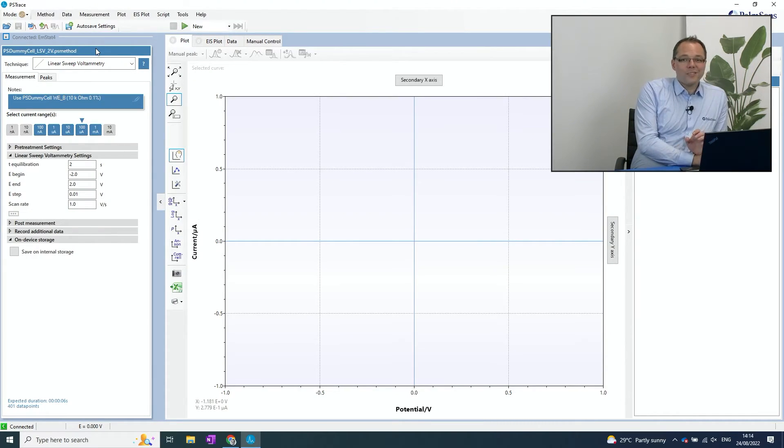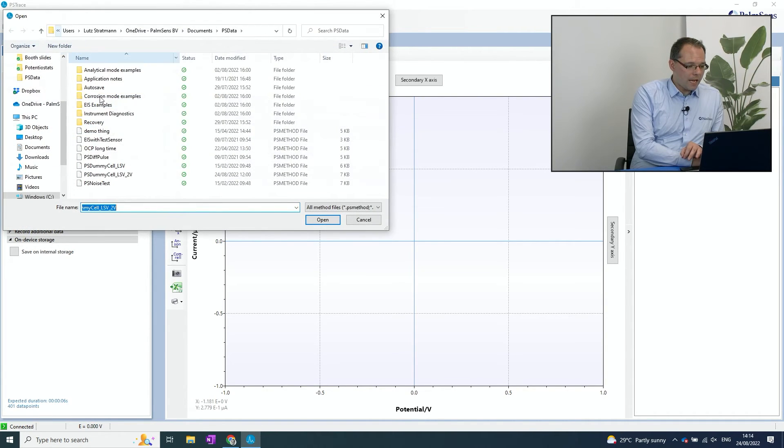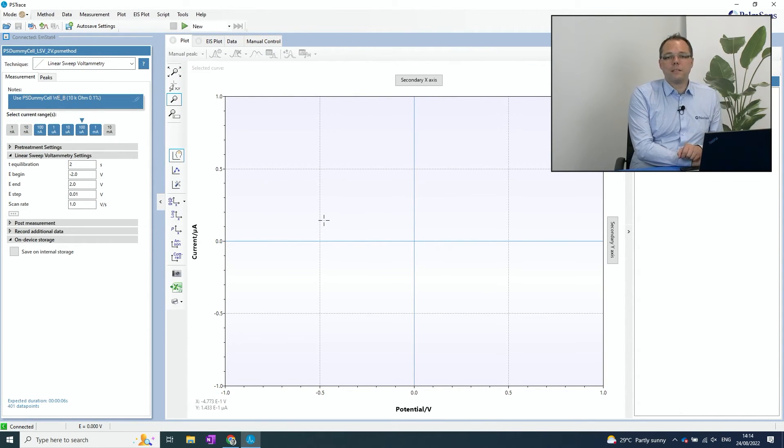So to set the parameters in the software for this first measurement, we will just load a method file. A method file contains all the parameters that you need for a measurement. It doesn't contain the data of a measurement itself. So to load such a file, I just choose Method, Load and pre-installed already in the Documents PSData folder, you will find the method file that we want to use today, which is PSDummyCell LSV 2V. I open that and all the parameters are already set for me. The only thing I have to do is press the Start Measurement button.